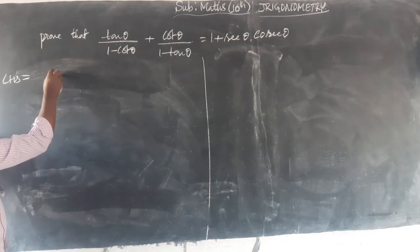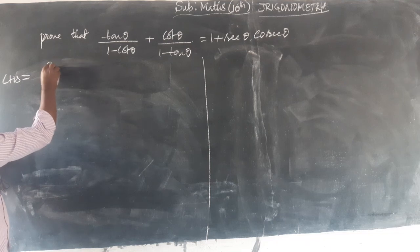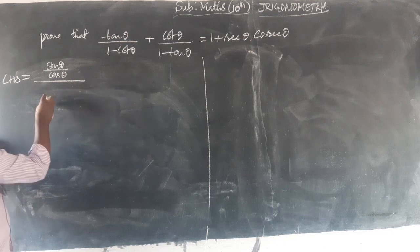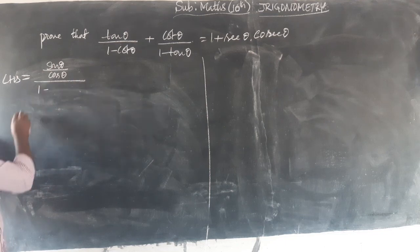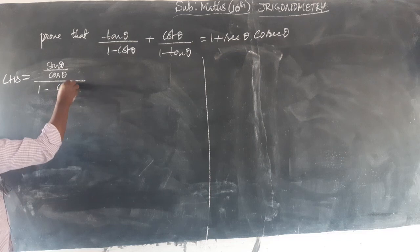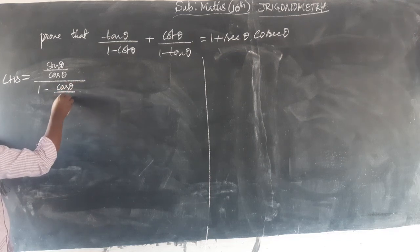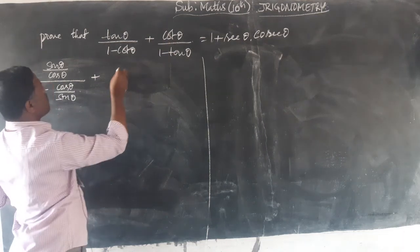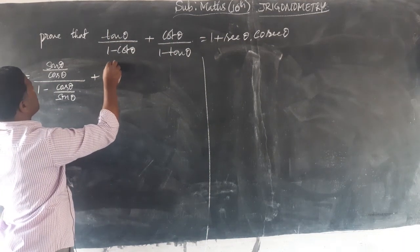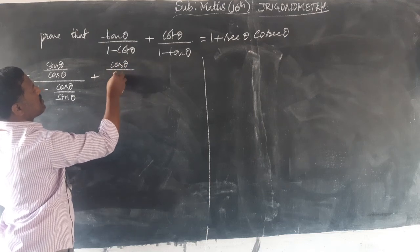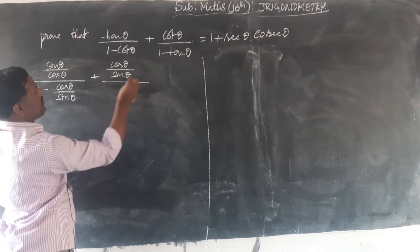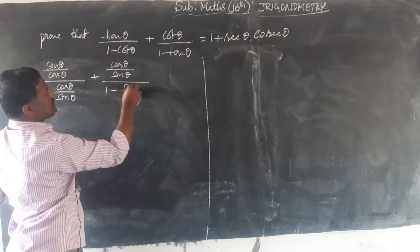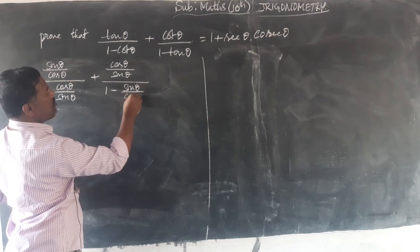Here in the place of tan θ, I would like to write sin θ/cos θ, divided by 1 minus, in place of cot θ that is cos θ/sin θ. Again we should take plus as it is. Again in the place of cot θ I should take cos θ/sin θ, divided by 1 minus, in place of tan θ I should write sin θ/cos θ.